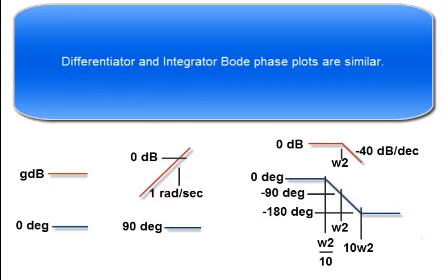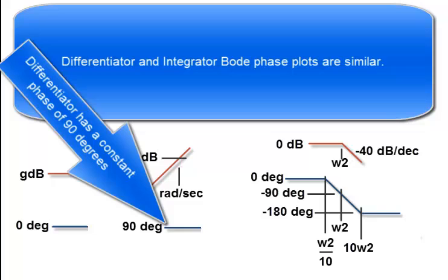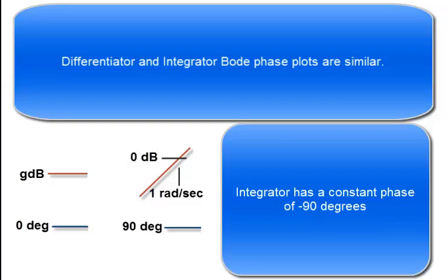Differentiator and integrator Bode phase plots are similar. The differentiator has a constant phase of positive 90 degrees, and the integrator has a constant phase of negative 90 degrees.